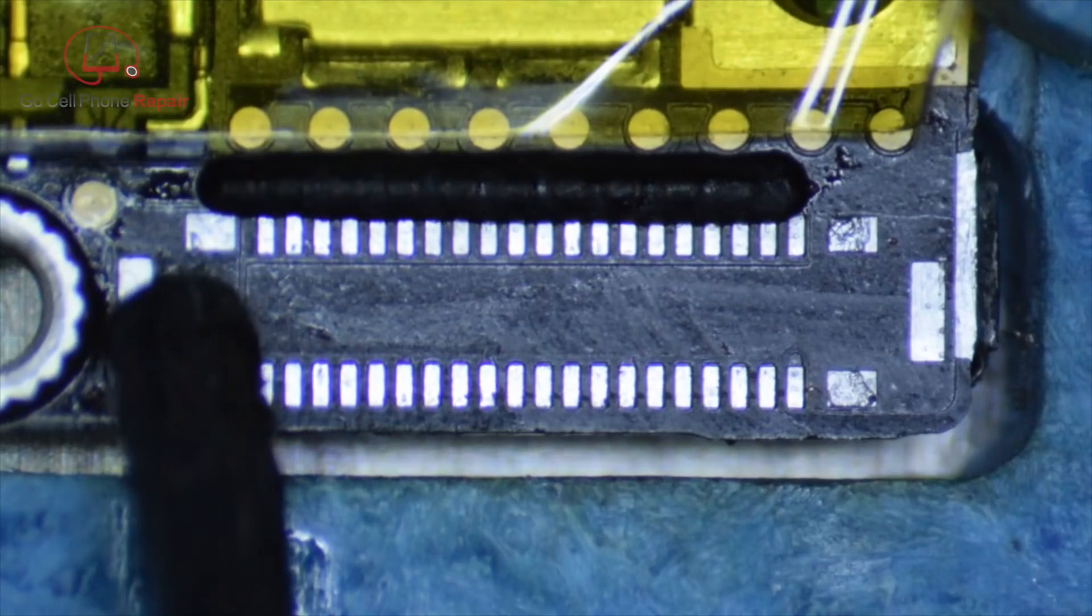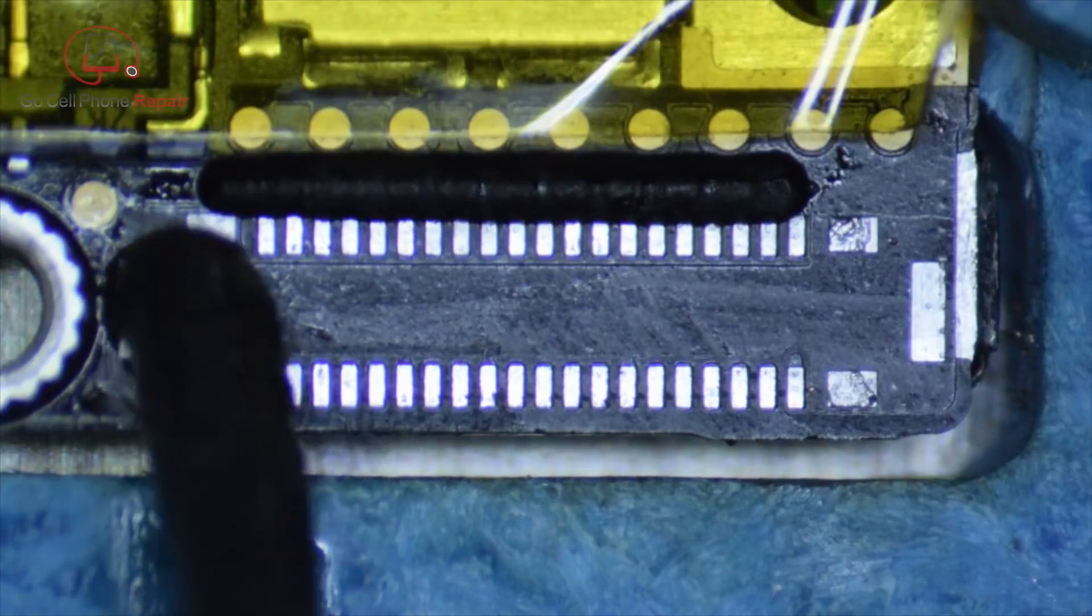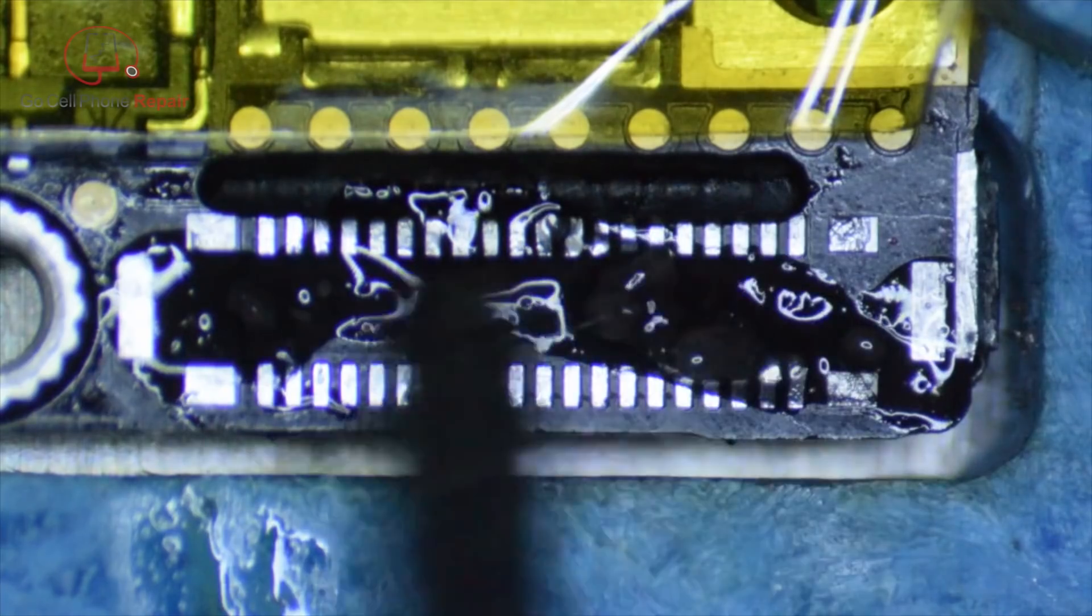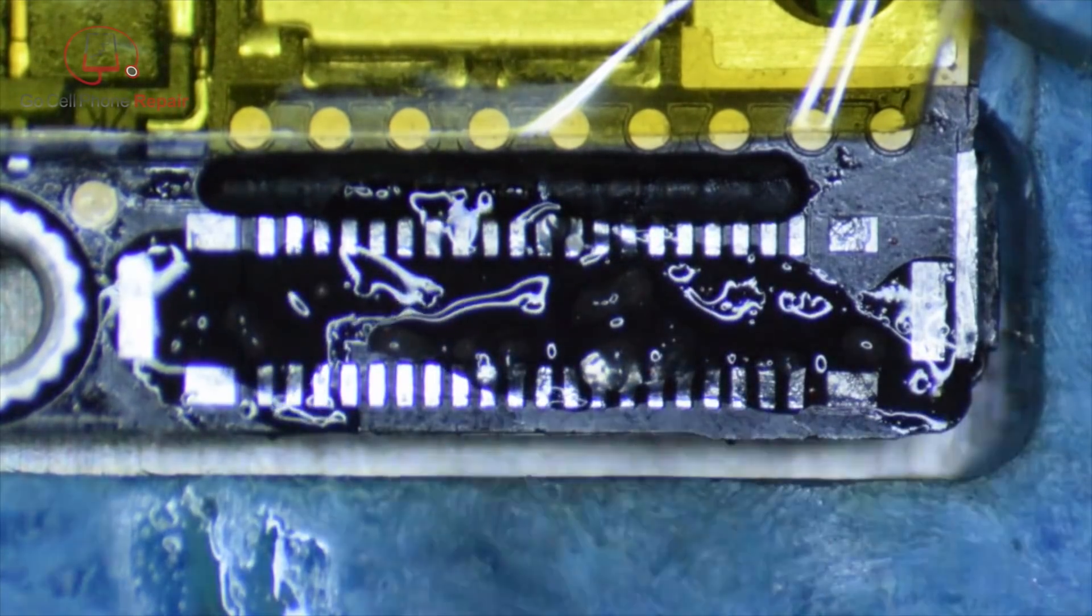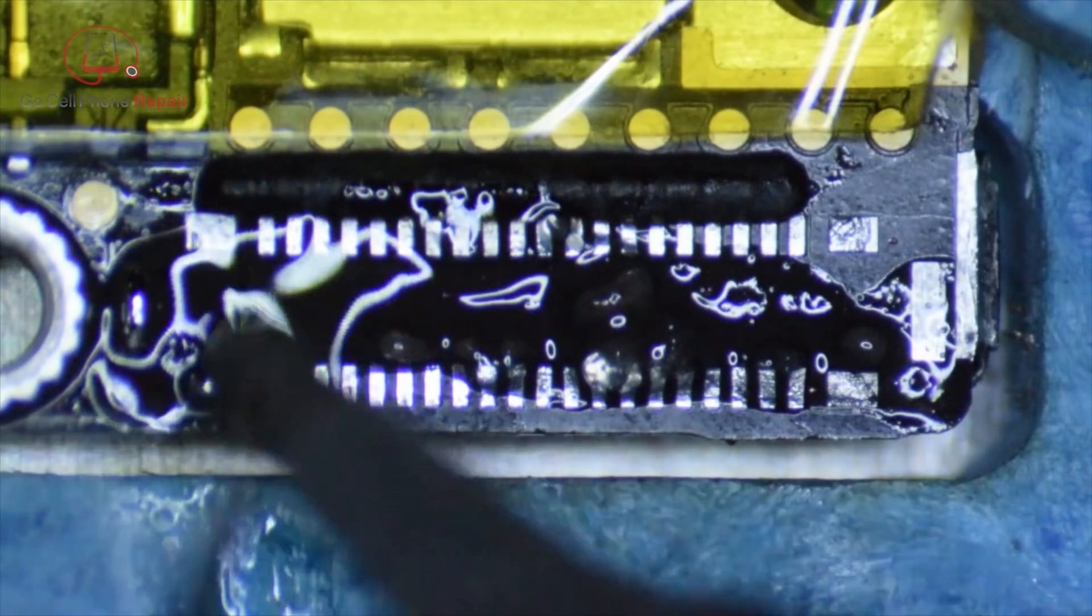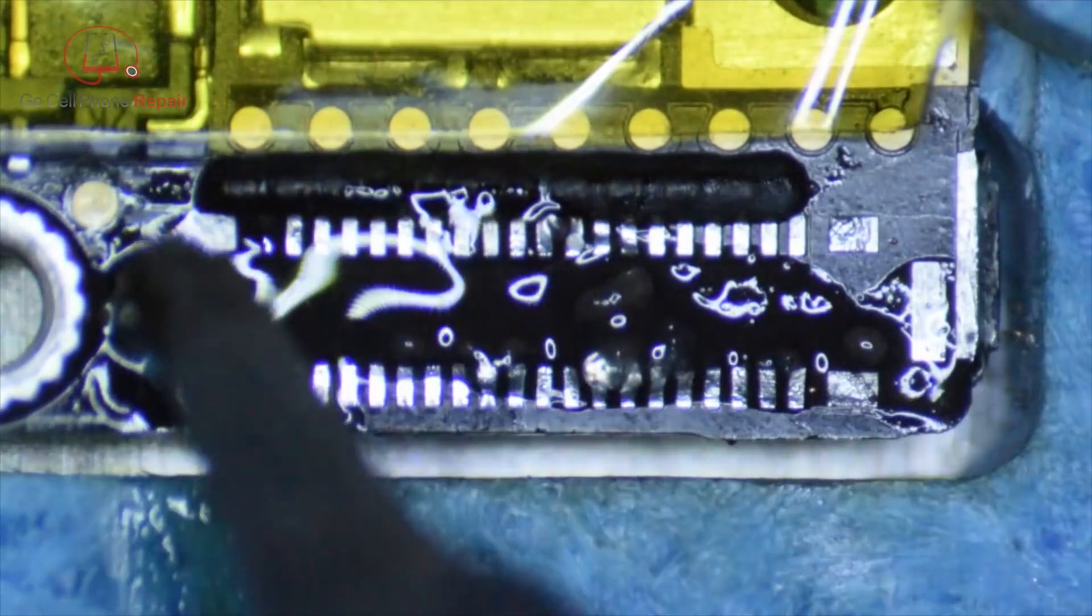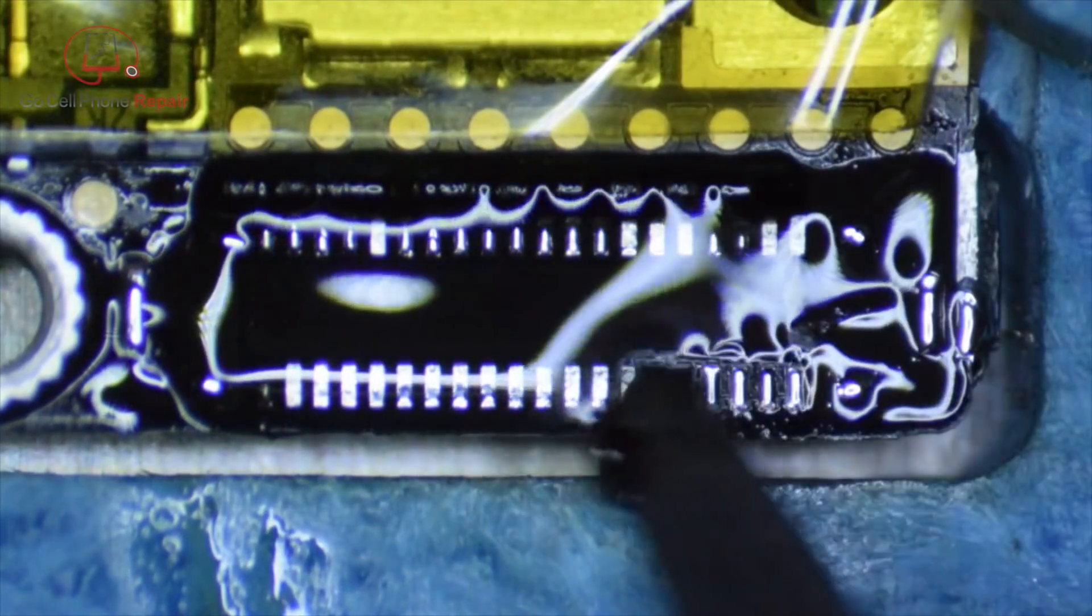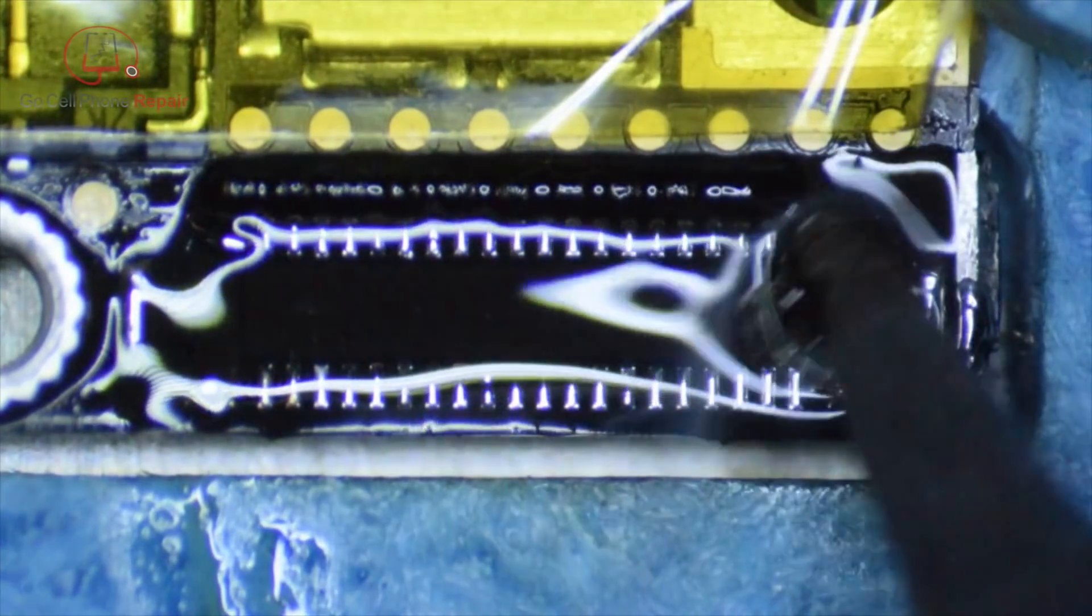That was my main concern because if that did get damaged, that would be one more thing that we have to replace. Now from here, I'm going to add some fresh flux onto our clean surface, and then we'll get some leaded solder onto all of these pads. You'll notice here at some point that on the far left and far right-hand side, I got a little more solder than I really intended to.